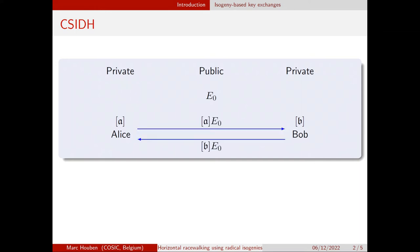What they do is they both act on the starting curve, and then they send the result to each other, and then they act on what they receive from the other person. And as long as the group action is commutative — which it is in this case, because the C in CSIDH stands for commutative — the result they get in the end is going to be the same.